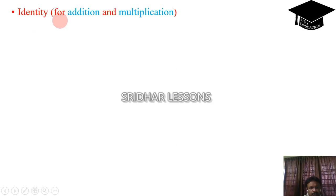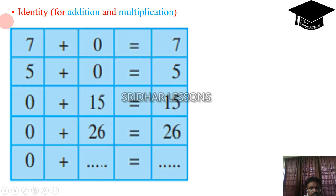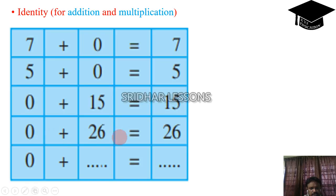Next, Identity — we will check it out for addition as well as for multiplication. Zero is the additive identity, that means 7 plus 0 is equal to 7, and 5 plus 0 is equal to 5. Whenever we add any number with 0, we get the same number. So 0 is acting as additive identity. 0 plus 15 is 15, 0 plus 26 is 26 — that means 0 is known as additive identity.